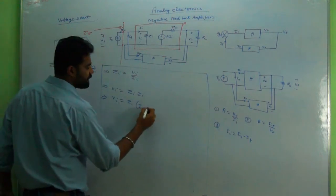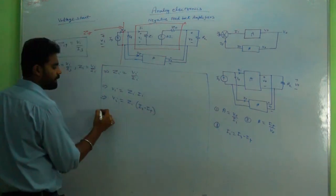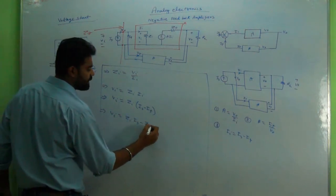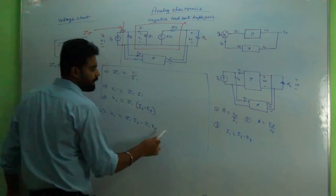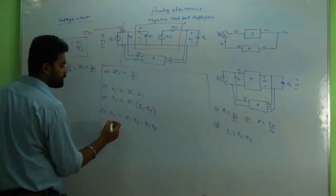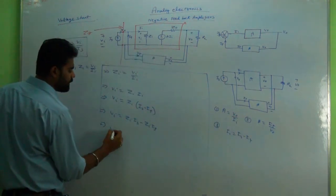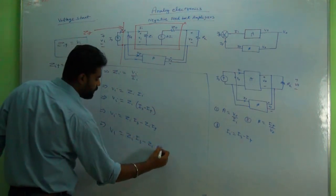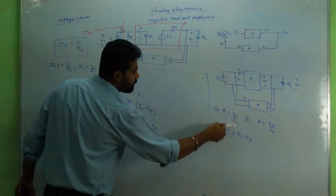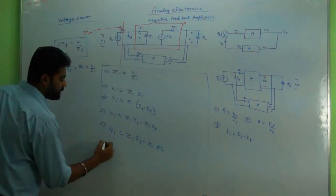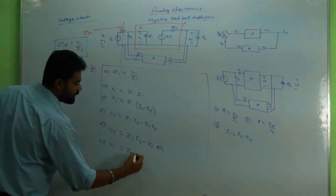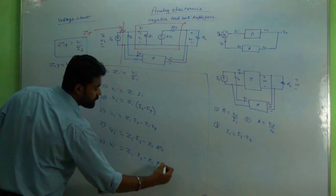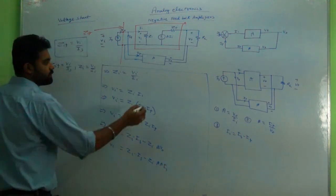VI minus IF, that is VI equal to ZI IS minus ZI IF. And IF can be written as beta into V naught. So VI equal to ZI IS minus ZI beta into V naught. And V naught can be written as A into II. So VI equal to ZI IS minus ZI beta A into II.